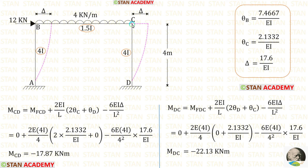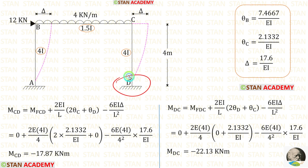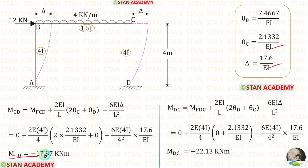Now let us make the slope deflection equations for column CD, which is also affected by sway. We add sway moments to the equations. Fixed end moments are 0. With L = 4 and moment of inertia 4I, and noting that theta D = 0 (fixed support at D), after applying the values of theta C and delta we obtain M_CD and M_DC.